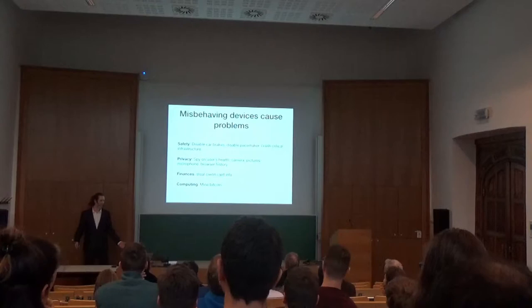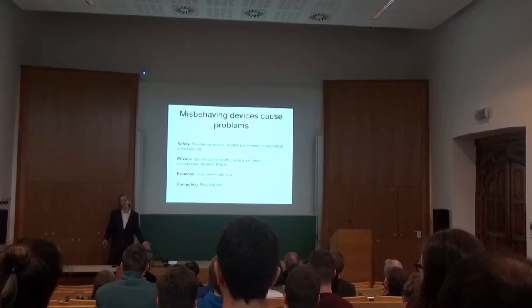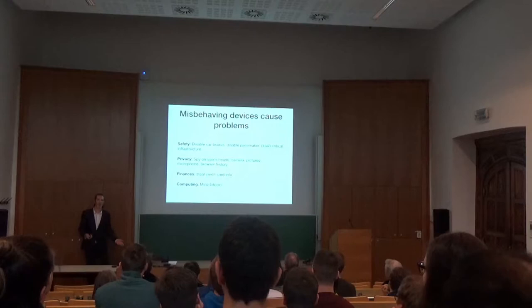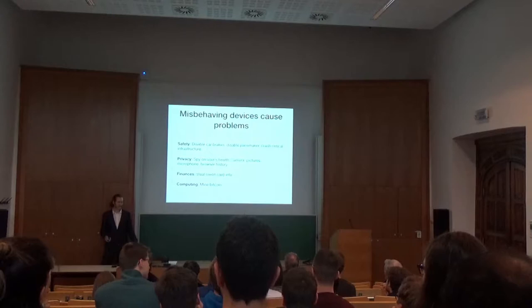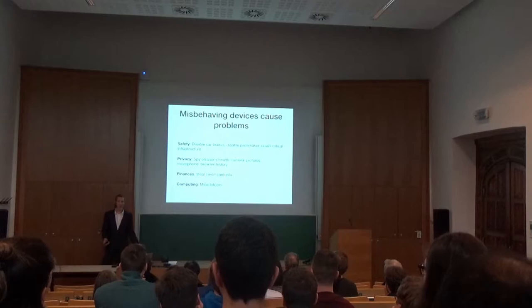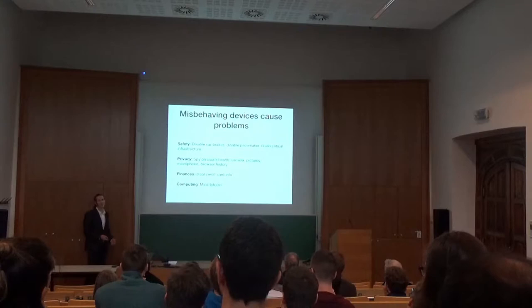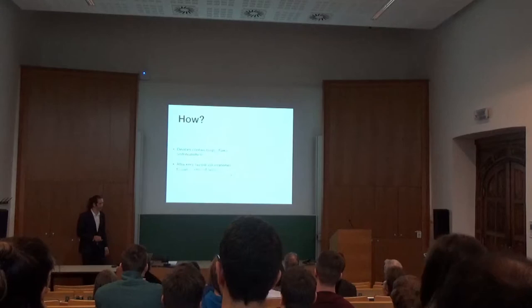Misbehaving devices can cause problems. What kind of problems can these misbehaving devices cause? It can have problems with safety — your car's brakes can be disabled by an attacker, your pacemaker can be disabled, critical infrastructure could crash. It can also have privacy implications — your devices can spy on the user's health, the camera pictures, microphone, browser history and so forth. Furthermore, it can have financial implications since your devices can steal your credit card information, and it can also steal computing power by mining cryptocurrencies such as Bitcoin.